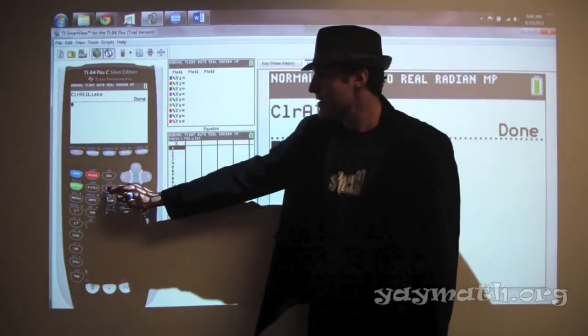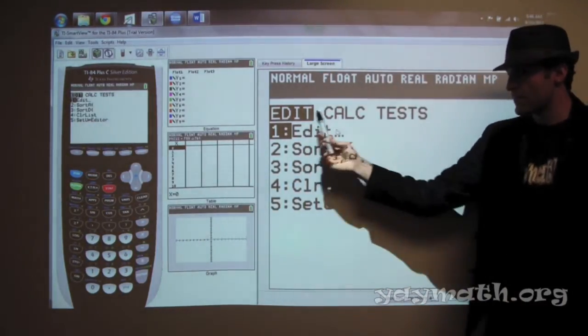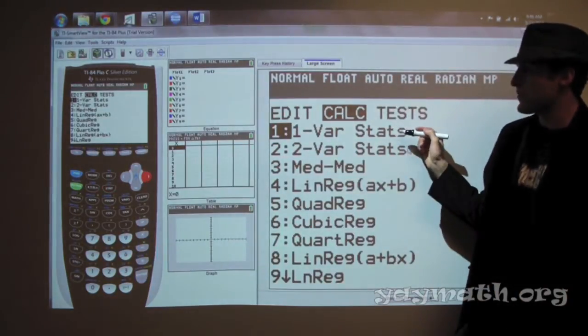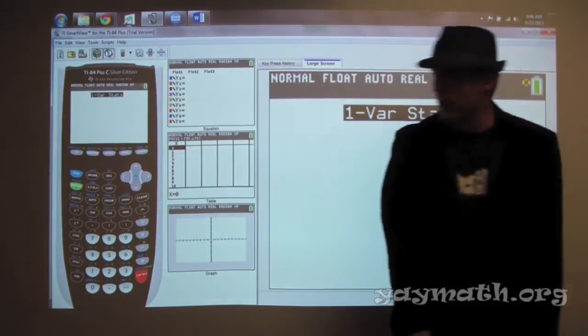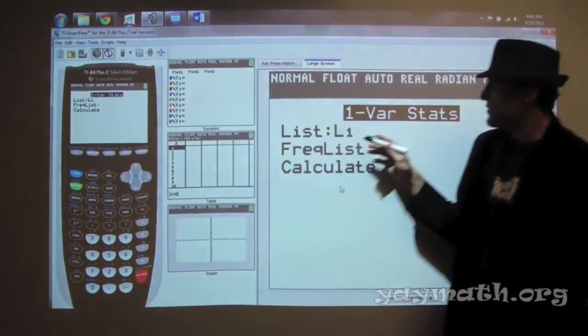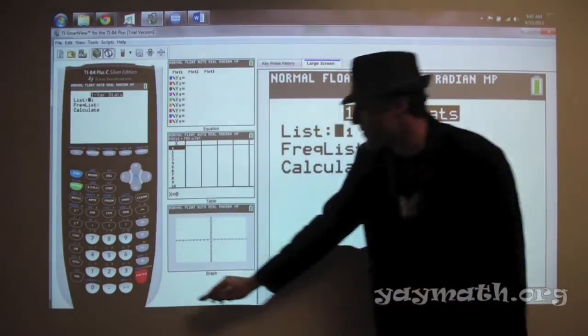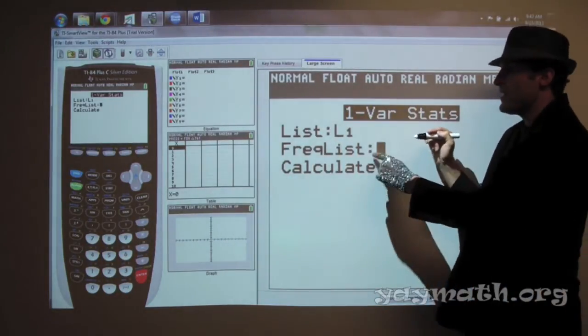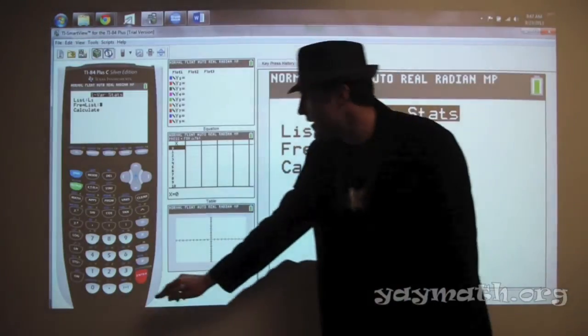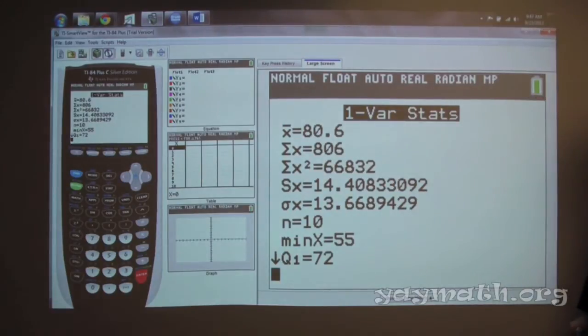So we can quit out of here. Second quit. And we're going to go to stat. And then there's tabs over here. This function here is calc. So we move over to the right. And you do one variable statistics. Are we out of time? Please say no. Five minutes. Good job. All right. So we're going to do one variable statistics on L1. So we're going to hit enter. Frequency just to introduce this, that means do the list one time. Hit enter again. Calculate.